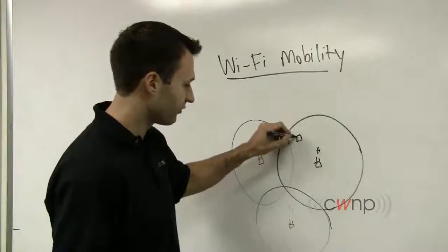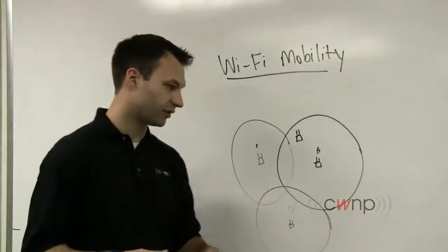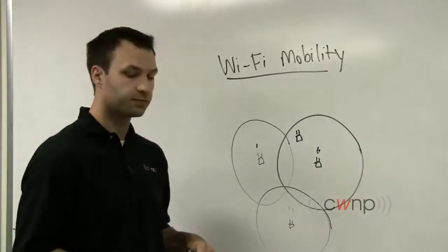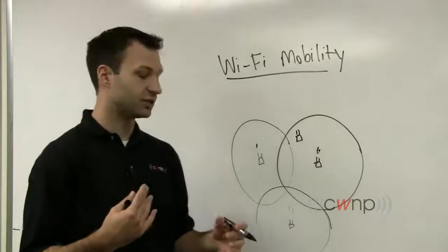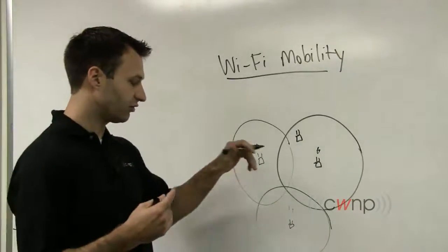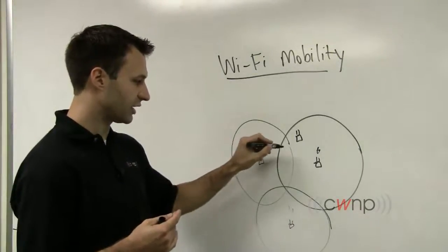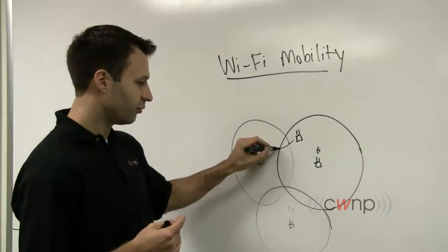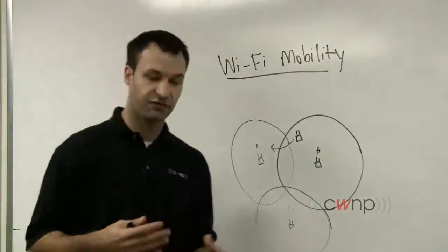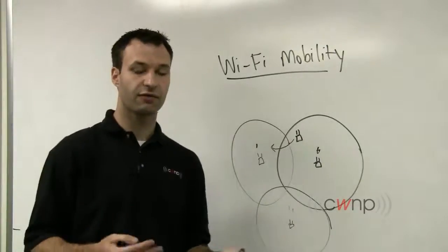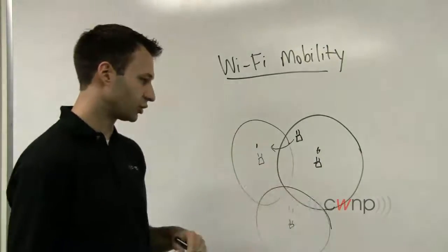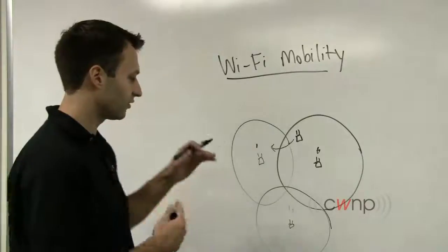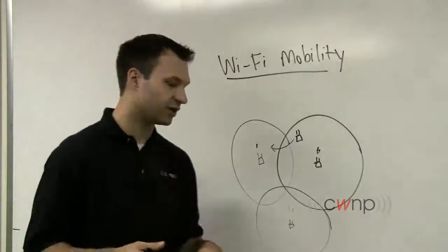We have a client that starts out over here on channel 6 and associates to this access point, and they're having their communications, and at some point in that exchange, the user of this device is moving throughout the physical environment and moves out of the service area of this access point on channel 6 and moves into the service area of this access point here on channel 1.